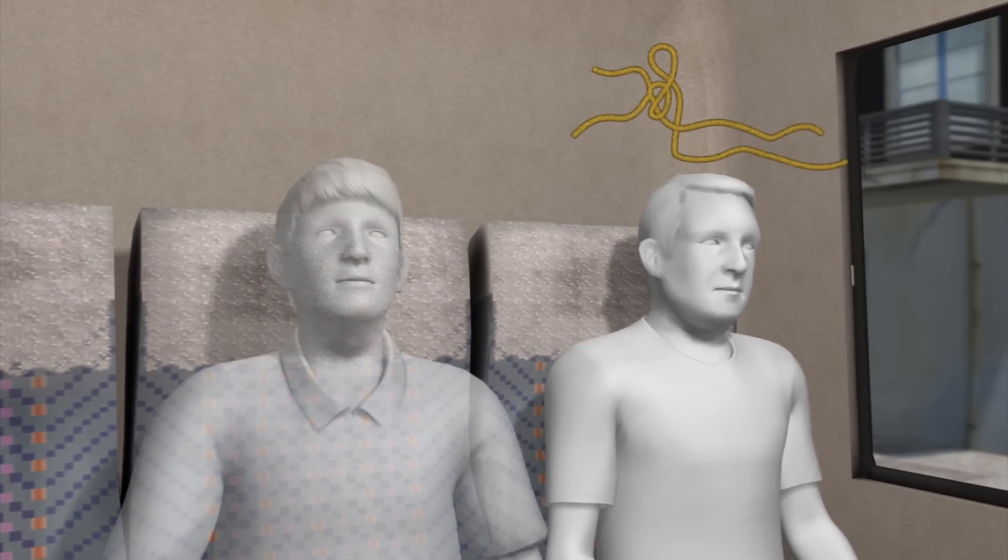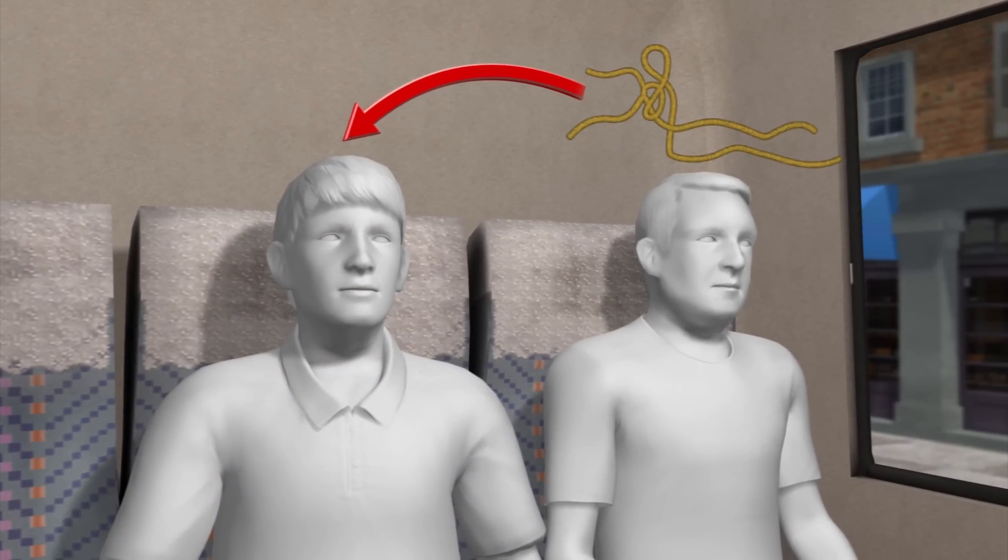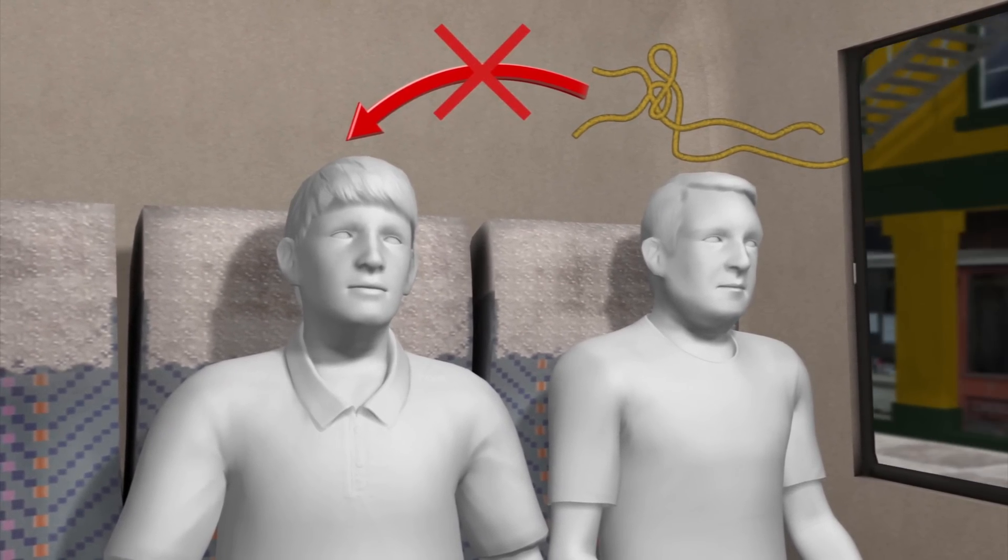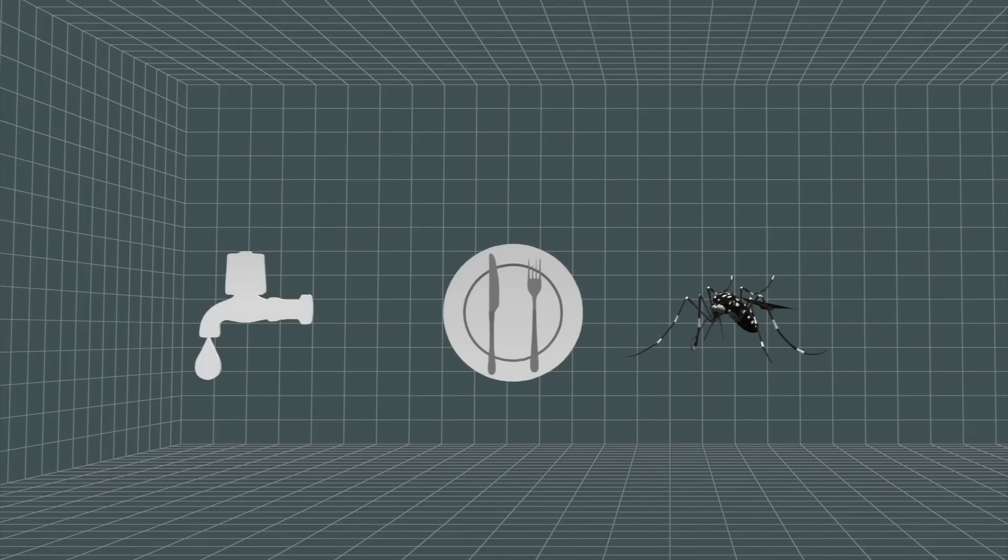Ebola is not an airborne virus, meaning that it cannot be spread by, for example, sitting next to an infected person in a bus or on a train. Ebola in general does not spread via water or food, or insects like mosquitoes.